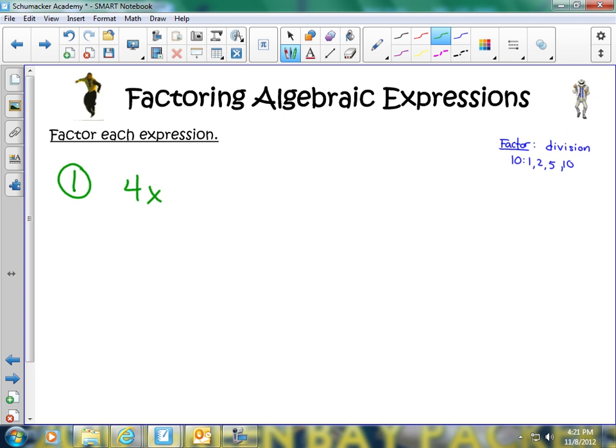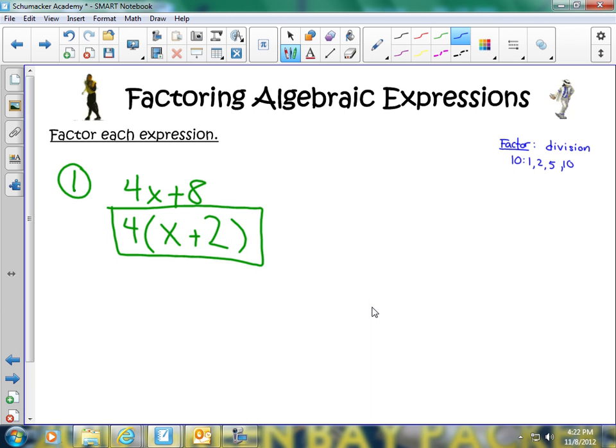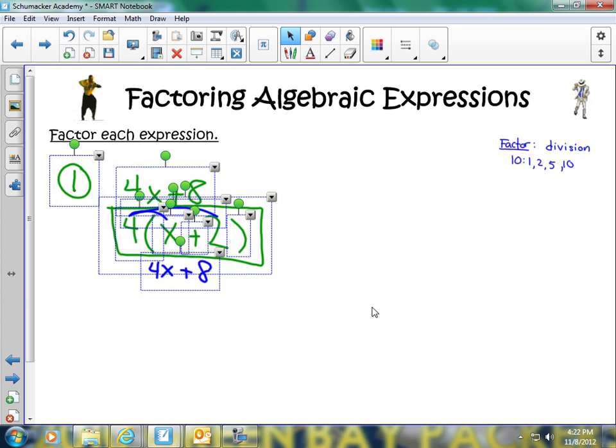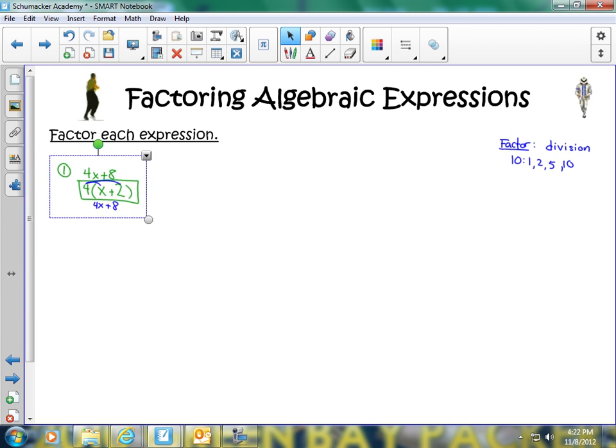Let's start off with 4x plus 8. We want to look at our coefficient and our constant, just the numeric parts, and find out if they have a common factor. 4 and 8 both have a common factor of 4, so I'm going to divide both of them by 4 and put them inside parentheses. Since there's addition in the middle, I'm going to have addition in the middle. 4 divided by 4 is 1, leaving us with x. 8 divided by 4 is 2. Our answer ends up being 4 times x plus 2 in parentheses. You can check it by using the distributive property: 4 times x is 4x plus 4 times 2 is 8. That takes us back to the original algebraic expression, and you know you've done it correctly.